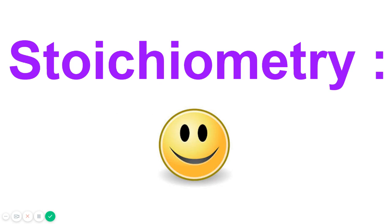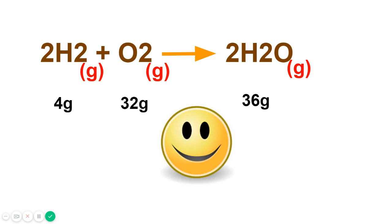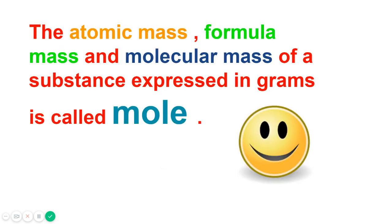Stoichiometry deals with the quantitative relationship between reactants and products. For example, in the formation of water: two moles of hydrogen react with one mole of oxygen to form two moles of steam, or two molecules of hydrogen react with one molecule of oxygen to produce two molecules of water, or four grams of hydrogen react with 32 grams of oxygen to produce 36 grams of water. The total mass of reactants equals the total mass of products, confirming the law of conservation of mass.